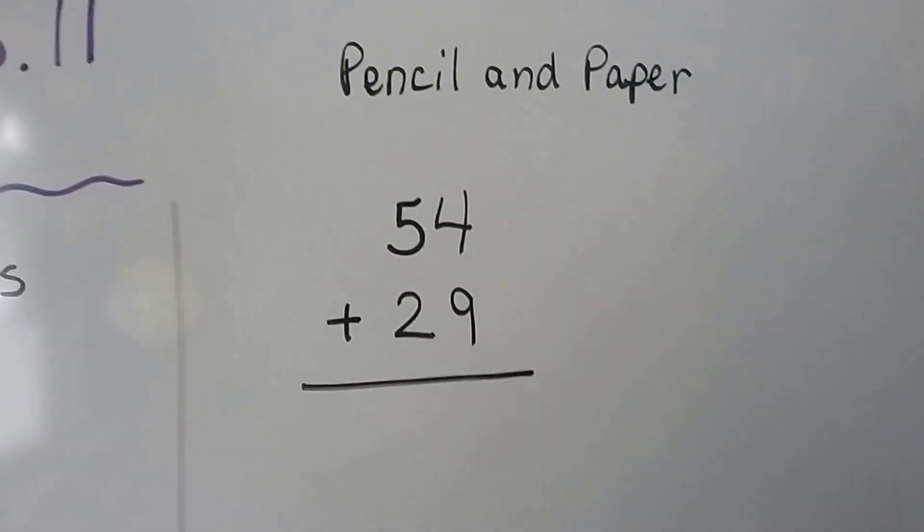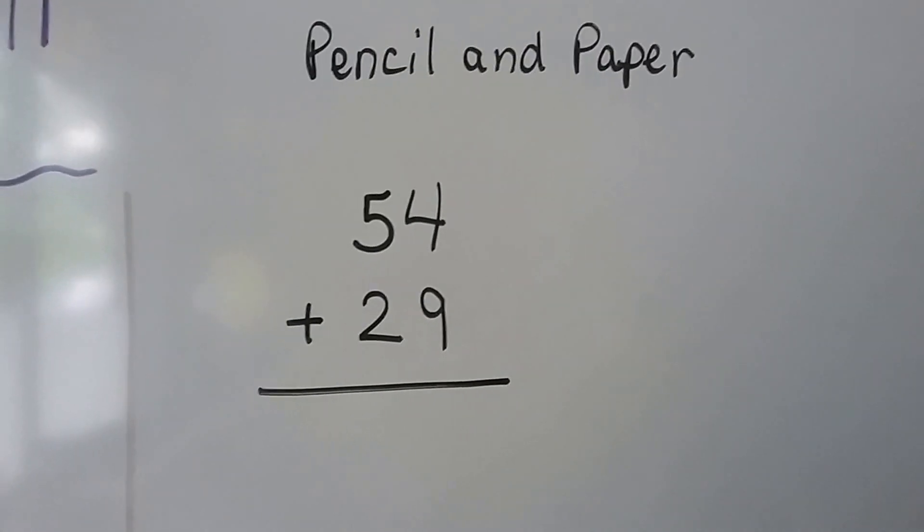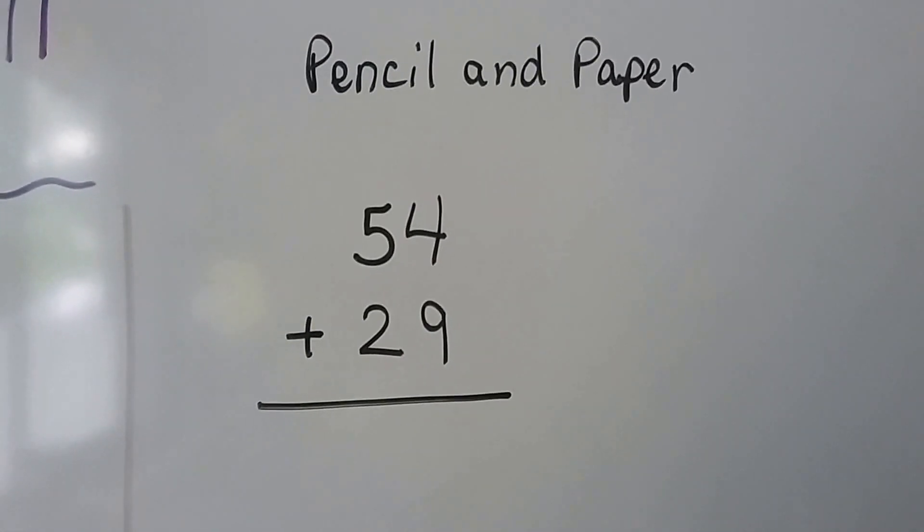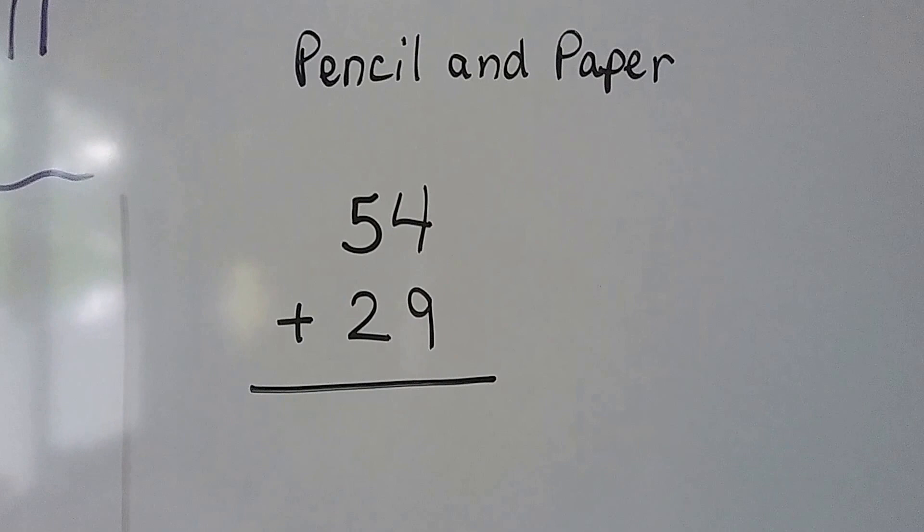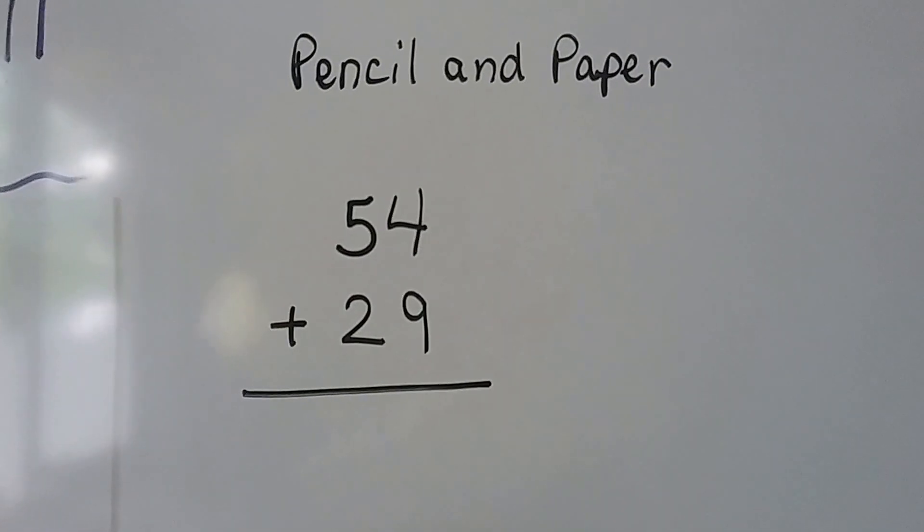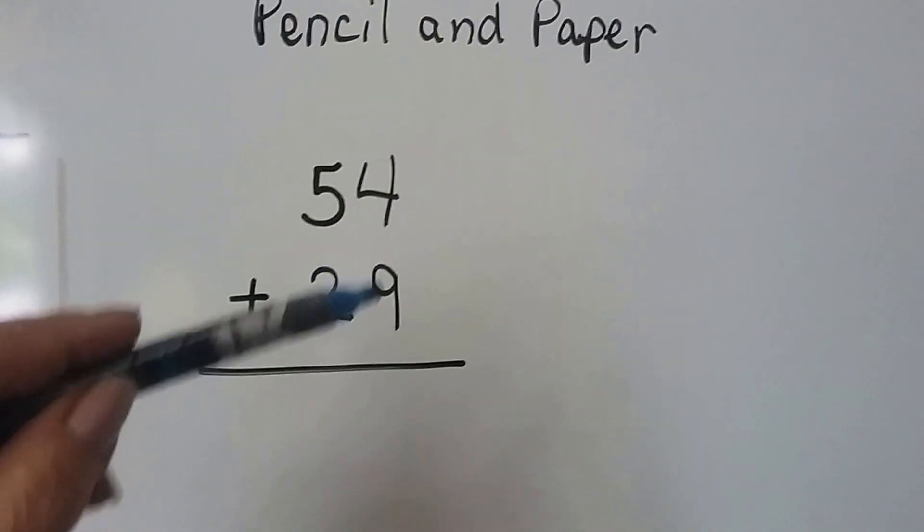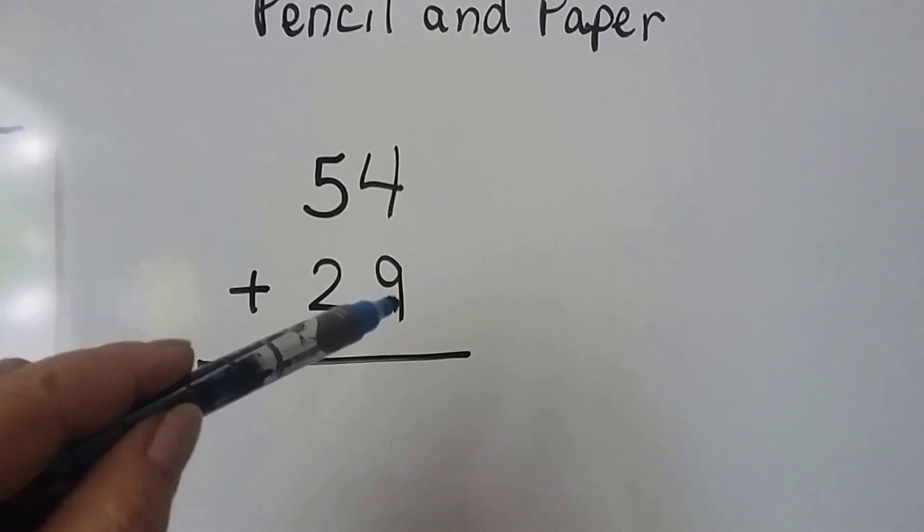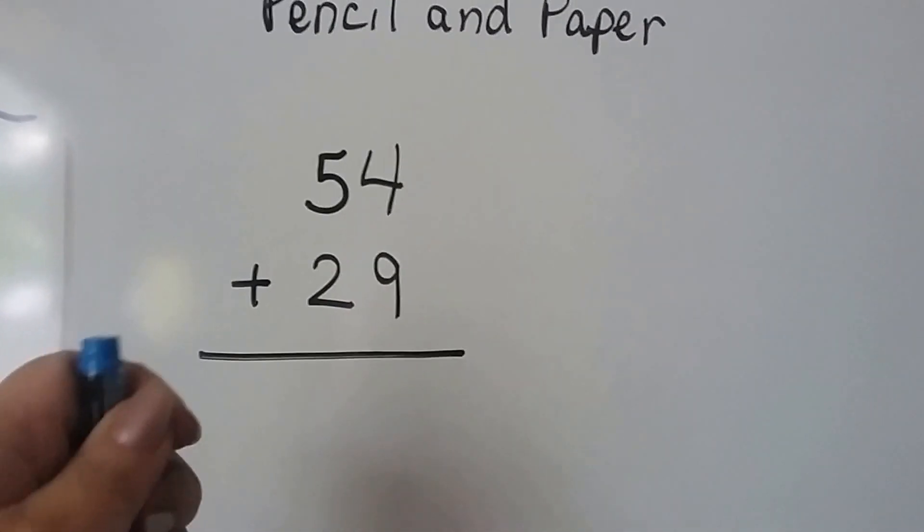When we have numbers like this, it's a lot easier to just use a pencil and paper. We could also use models to do this one. We would add the ones place, counting on from the larger number than 9, and add the 4.